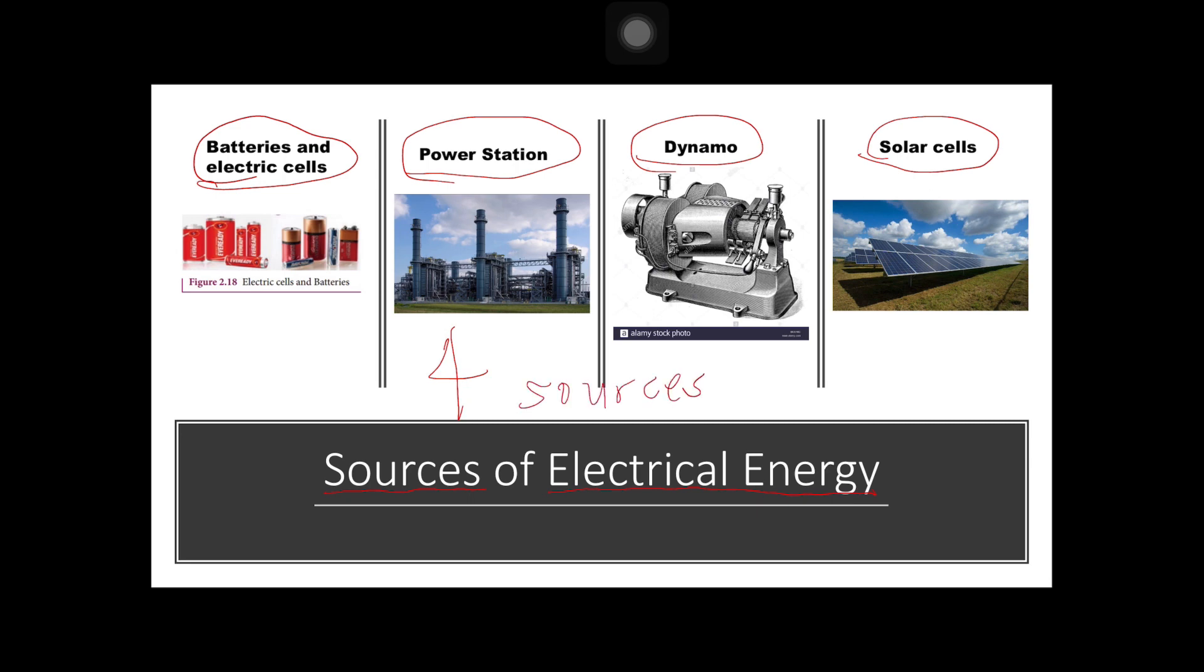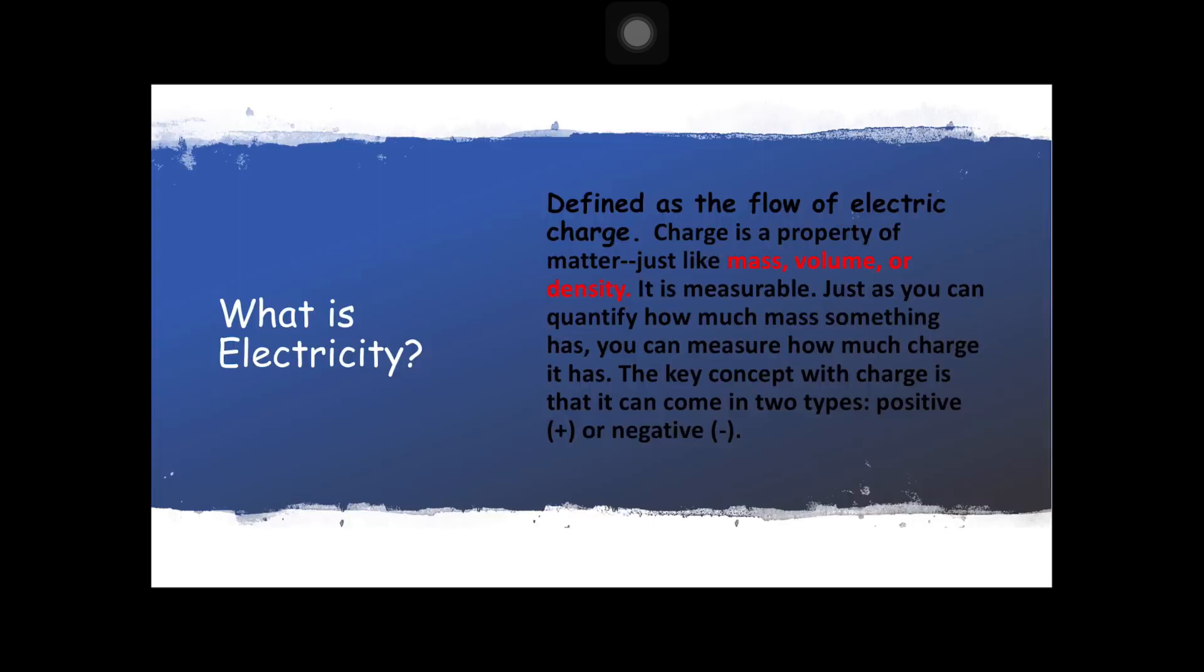So what is electricity? It is defined as the flow of electric charge. Charge is a property of matter, such as mass, volume, or density. It is measurable. Just as you can quantify how much mass or volume matter has, you can measure how much charge it has. The key concept: charge can come in two types, positive (+) or negative (-).